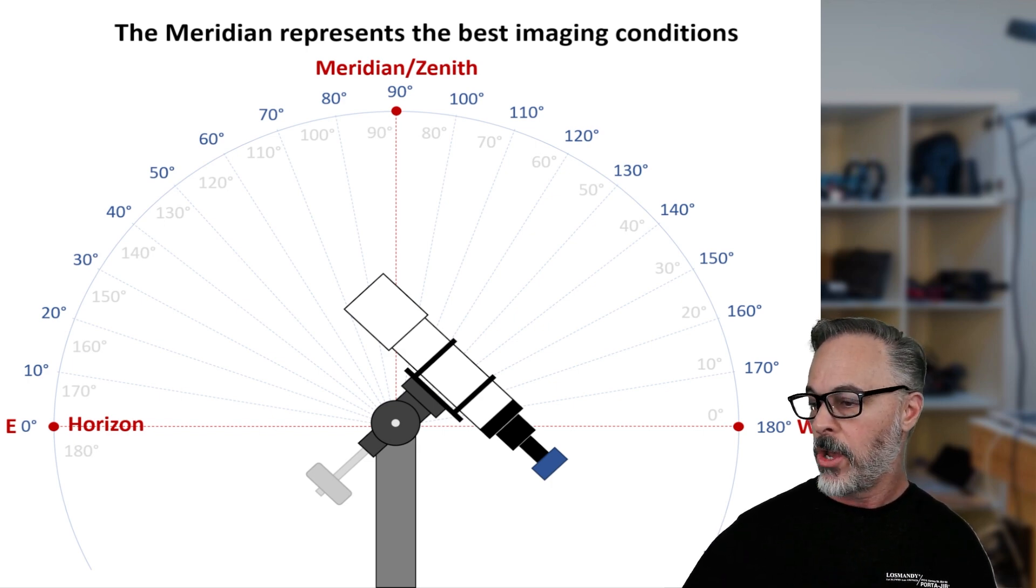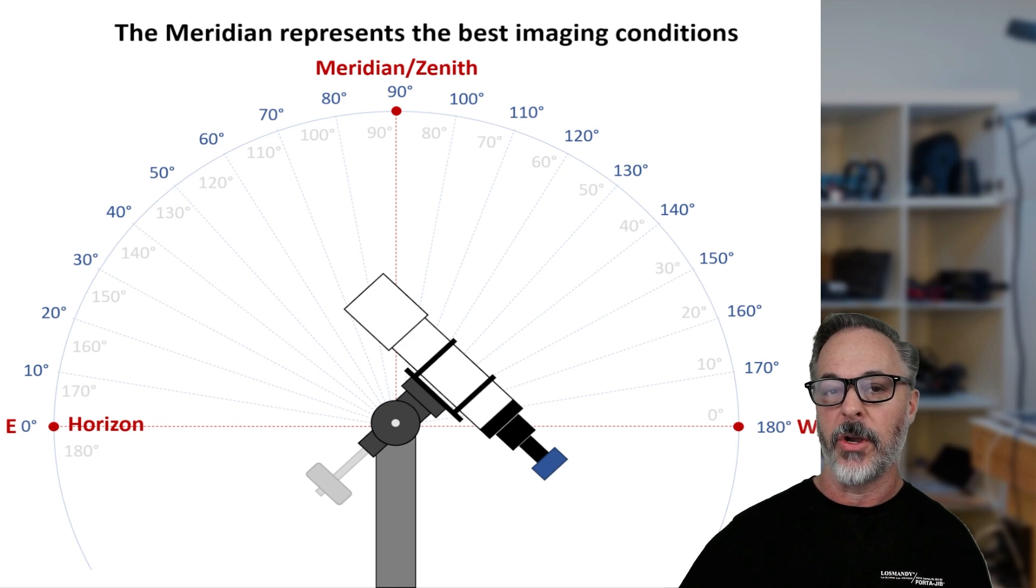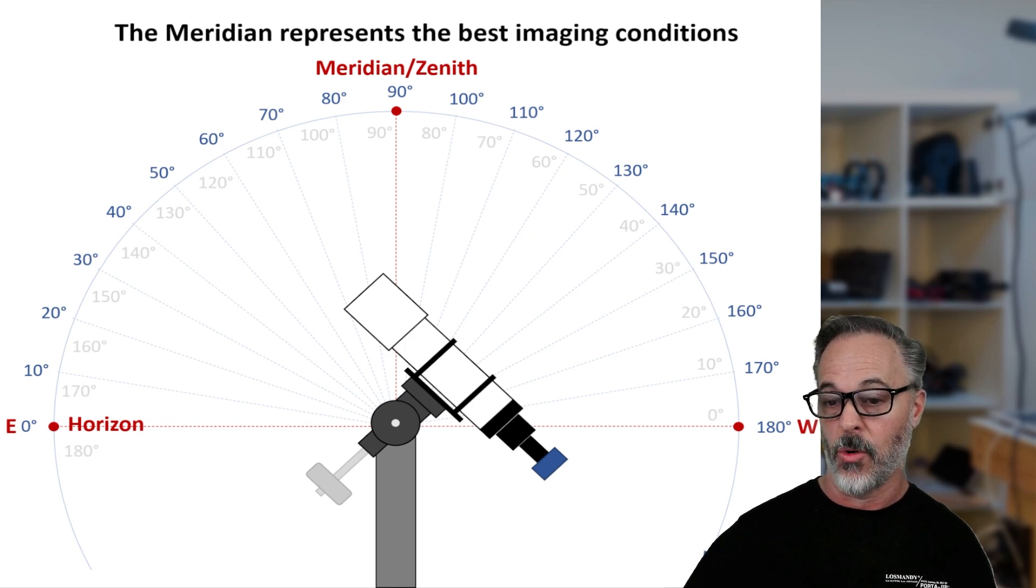So on the outside one here, it goes from zero up through 90 at the Meridian or the Zenith is the example we're going to use. And then all the way over to 180 degrees on the Western side. And then inside, we have some gray numbers going from West at zero degrees counting backwards.